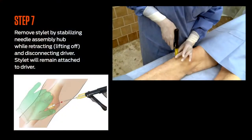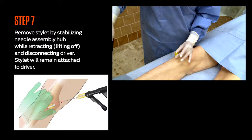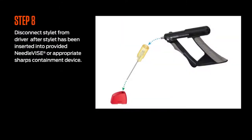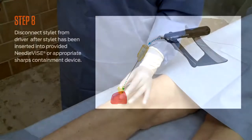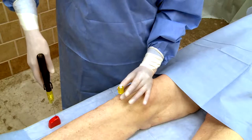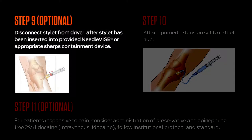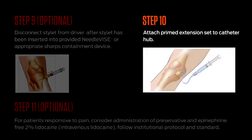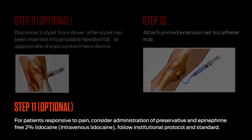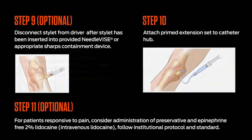Step 7: Remove the stylet by firmly stabilizing the needle assembly hub while simultaneously retracting, lifting off, and disconnecting the driver. Step 8: Disconnect the stylet from the driver. Place the provided needle vise on a flat, stable surface and firmly insert the stylet directly down into the open needle vise. Step 9 (optional): Obtain blood samples for laboratory analysis. Step 10: Attach the primed extension set to the catheter hub and firmly secure by twisting clockwise. Step 11 (optional): For patients responsive to pain, consider administration of preservative- and epinephrine-free 2% lidocaine.